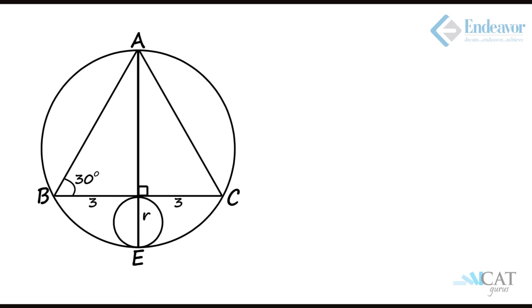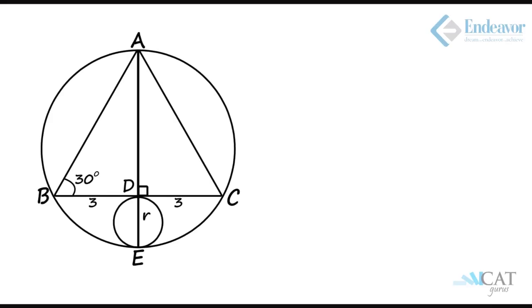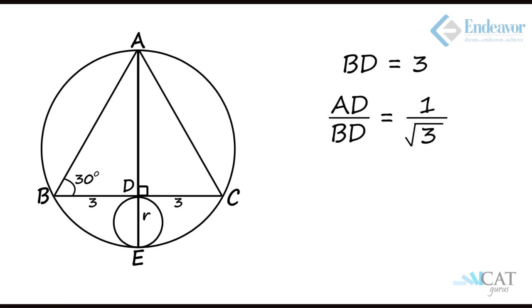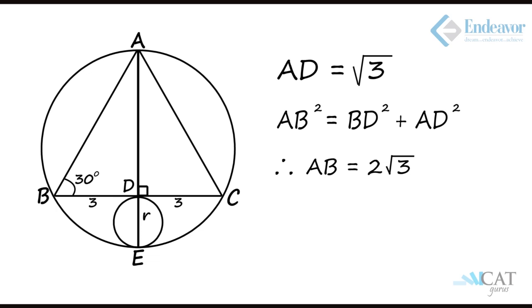If we look at the angles given to us, we will be using Pythagorean triplets and the concepts of circles. With the base angle of 30 degrees as our reference point, side AD — the perpendicular drawn from point A to the base BC — is the side opposite 30 degrees. The base is 3 units, so the opposite side is 3 upon root 3, that is root 3 units. Hence, the hypotenuse AB will be 2 root 3 units.